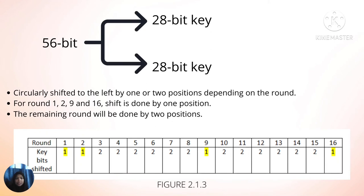Next, all the 56 bits of the key are divided into two halves, each with an equal 28-bit key. Every bit on both halves will be circularly shifted to the left by one or two positions depending on the round. For rounds 1, 2, 9, and 16, the shift is done by only one position. For the remaining rounds — 3, 4, 5, 6, 7, 8, 10, 11, 12, 13, 14, and 15 — the shift is done by two positions, as shown in figure 2.1.3.